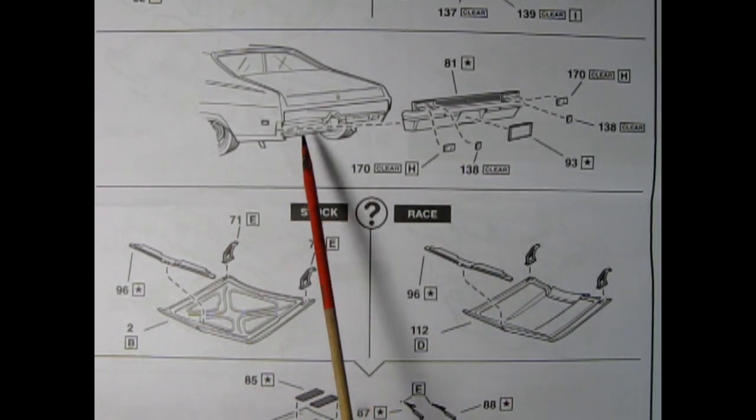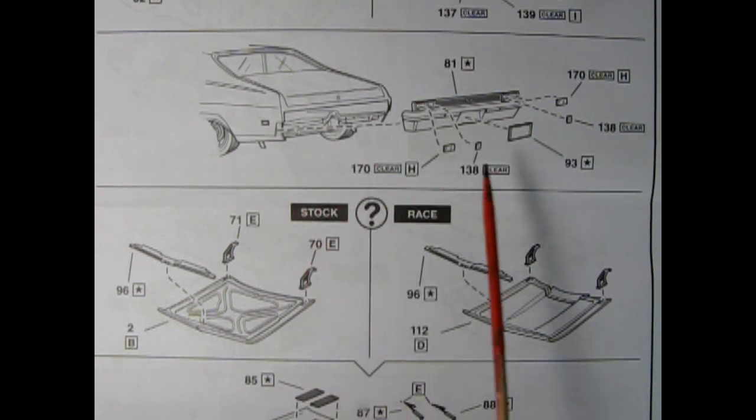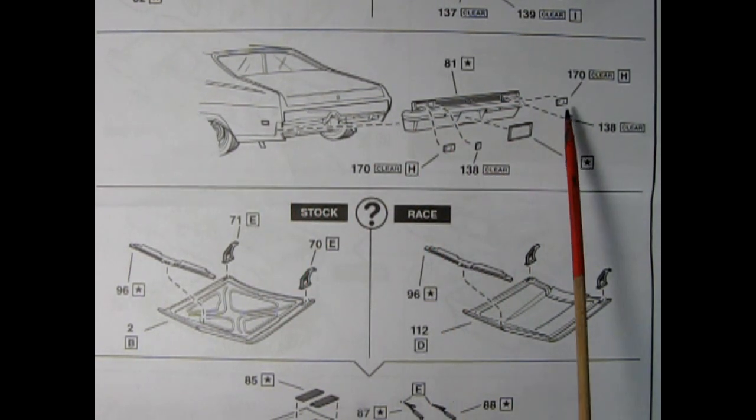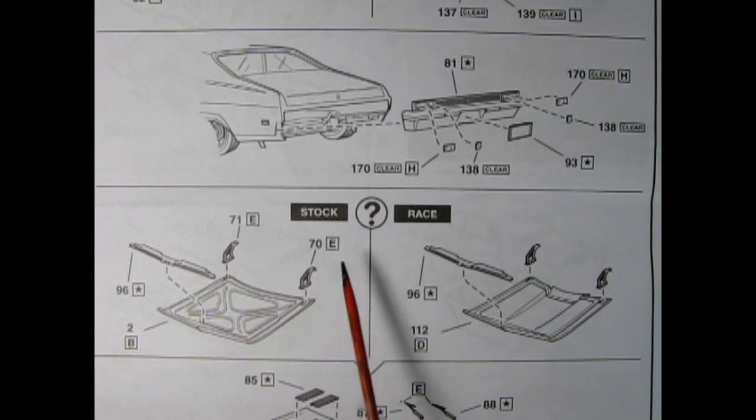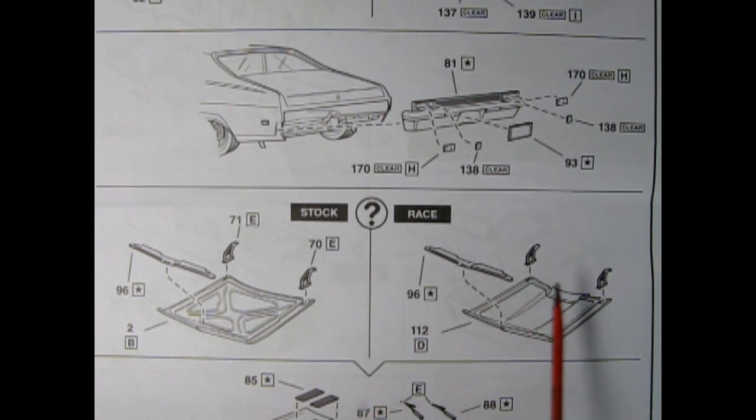Here we finish off the back end of our Nova by installing the rear bumper onto the rear fenders. Then we put in our rear turn signals as well as our backup lights and the license plate decal. Down below we have our choice of either the stock or the racing hood. The racing hood has the bulge in toward the back.